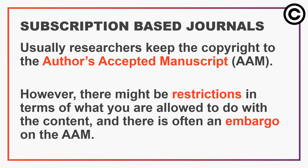When you publish your work in a subscription-based journal, usually you keep the copyright to the author accepted manuscript or AAM. This is the version of the paper after peer review but before any changes such as formatting have been added by the publishing journal. It's important to be aware that whilst you may retain the copyright for the AAM, many journal policies place restrictions on what you are allowed to do with its contents. For example, it is common for the journal to stipulate that you can only deposit the full text of your manuscript in a repository after an embargo period — meaning the full text cannot be made available elsewhere for a certain amount of time after publication.